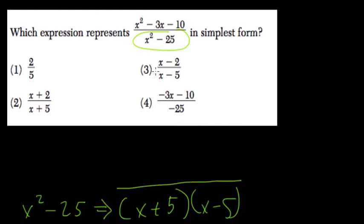And in the numerator, we have something slightly more complex. So it's x squared minus 3x minus 10. What factors of negative 10 add up to negative 3? Well, I would say negative 5 and 2, right?